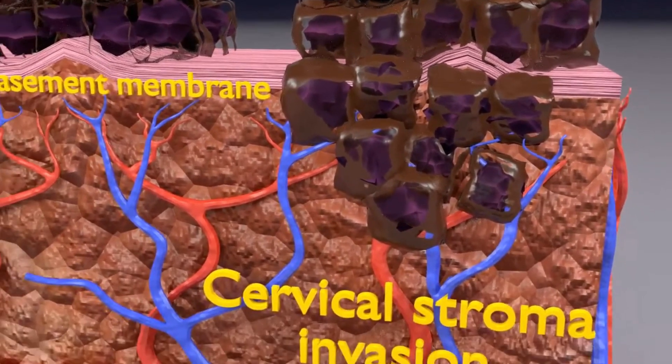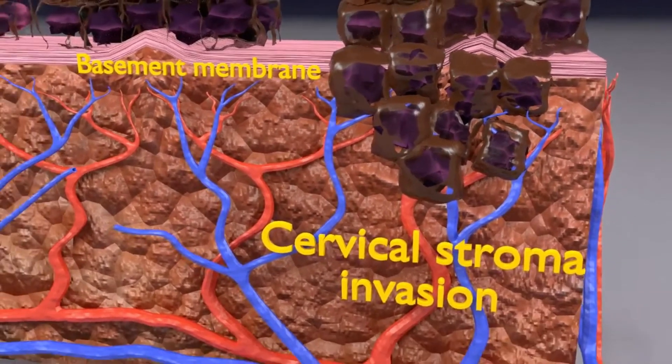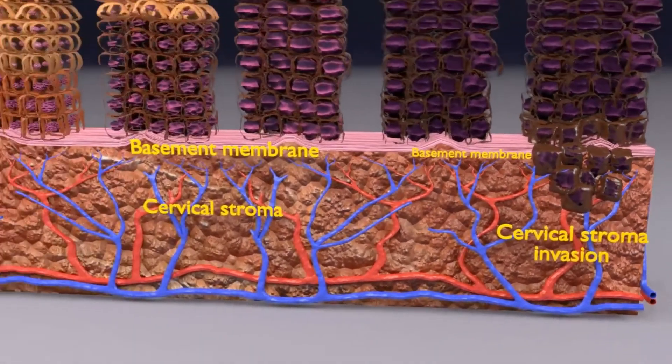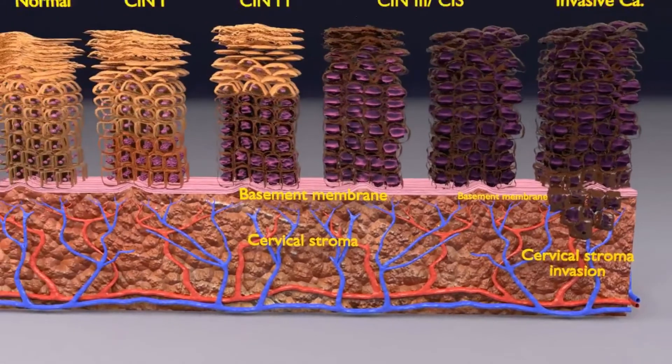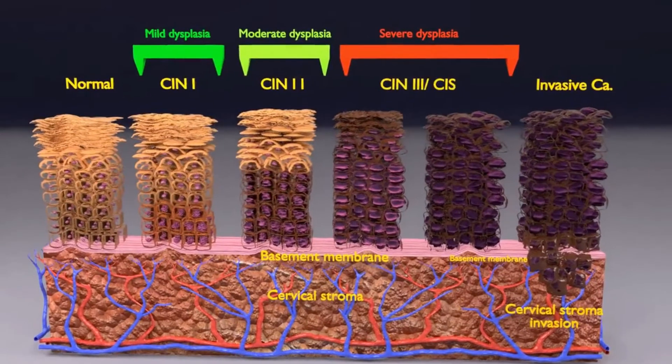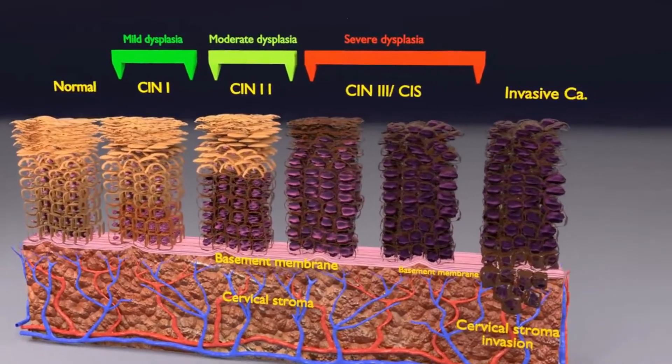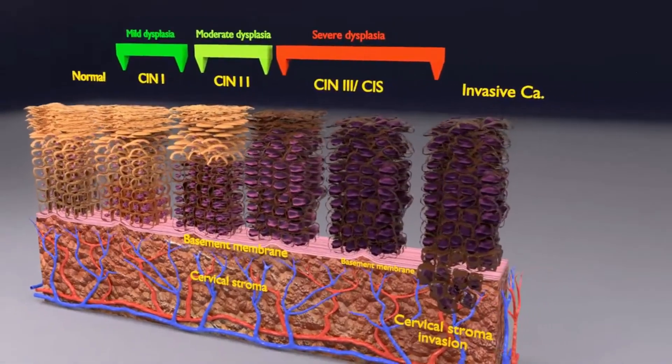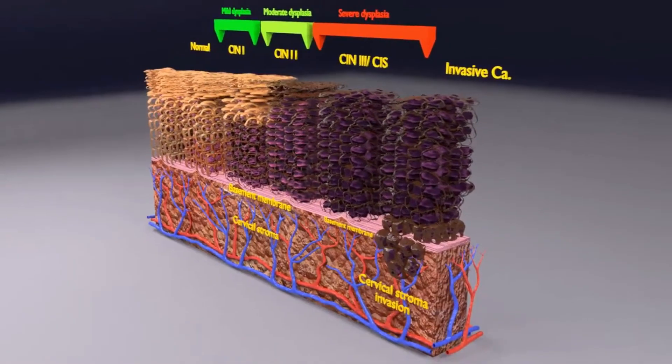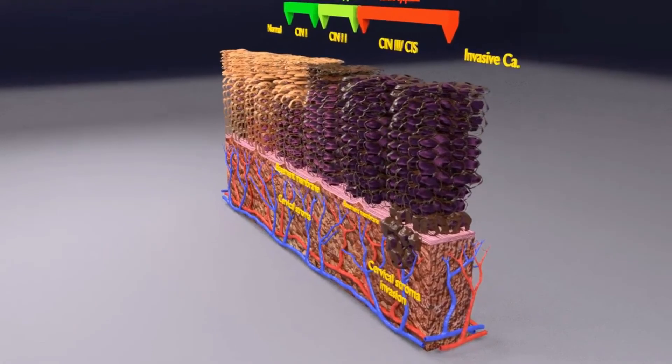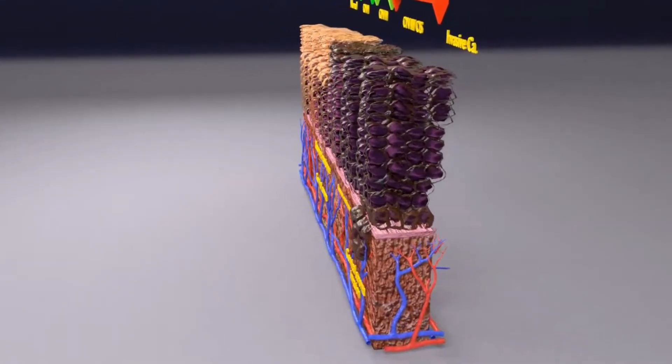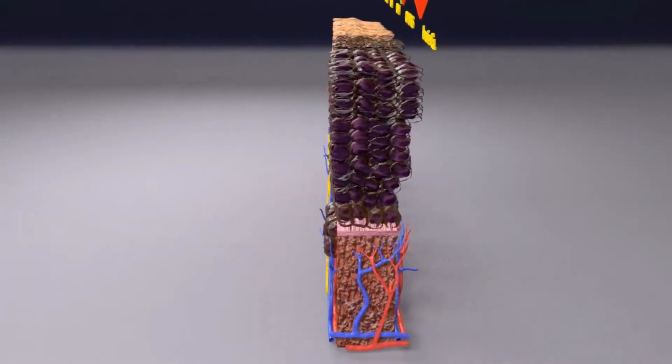Screening for pre-invasive stages is done using pap smear and human papilloma virus testing. The pap test involves collection of some cells from the cervical transformation zone with a brush. These cells are then examined under a microscope for dysplastic changes. If the pap test comes out positive for dysplasia, it may be followed by colposcopic guided punch biopsy from the suspicious area of the cervix.